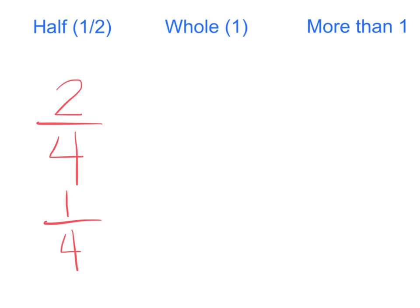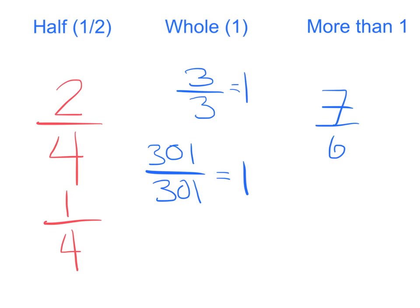For a whole, the two numbers on the top and bottom, numerator and denominator, have to be exactly the same. So 3 over 3 is a whole, just like 301 over 301 is still a whole. If the numbers match, you have a whole. And of course, if the numerator is larger than the denominator, then you have a fraction that is now more than one. So finding out if something is more than one, if it is exactly at one, or how it compares to a half, is very handy information for finding fractions and comparing fractions.